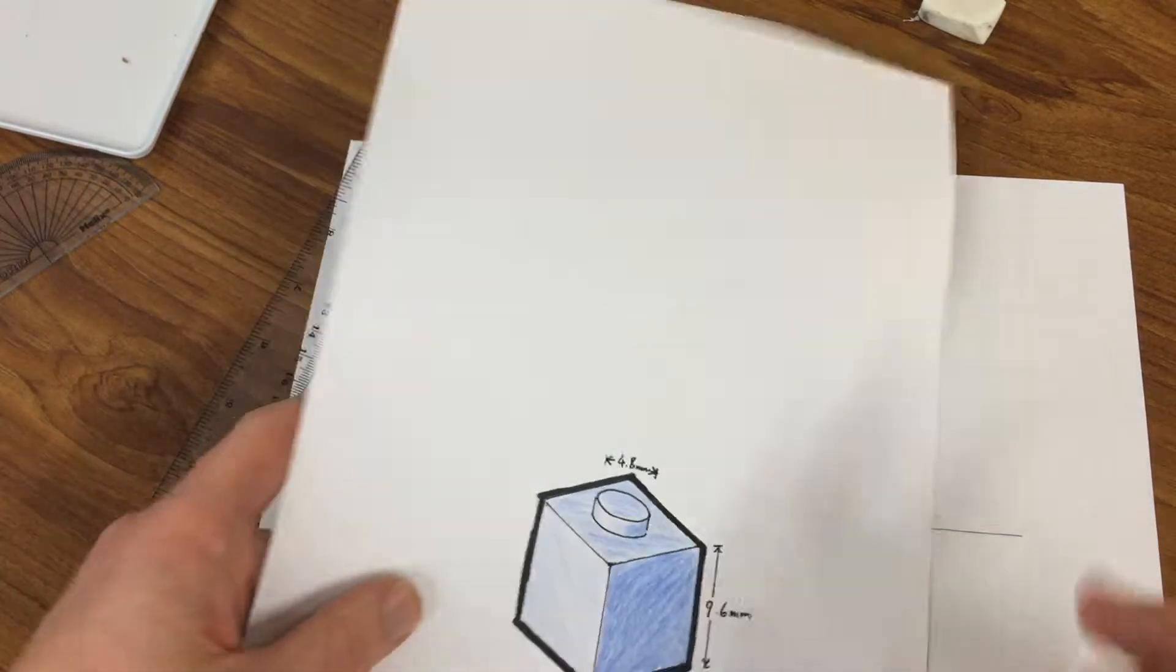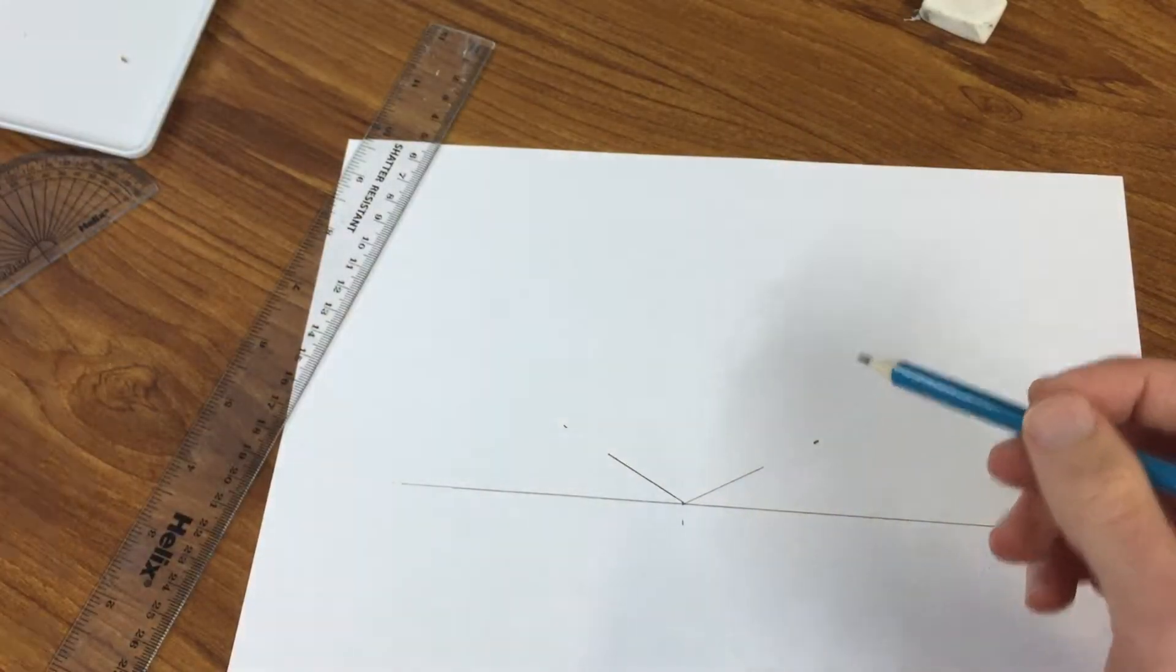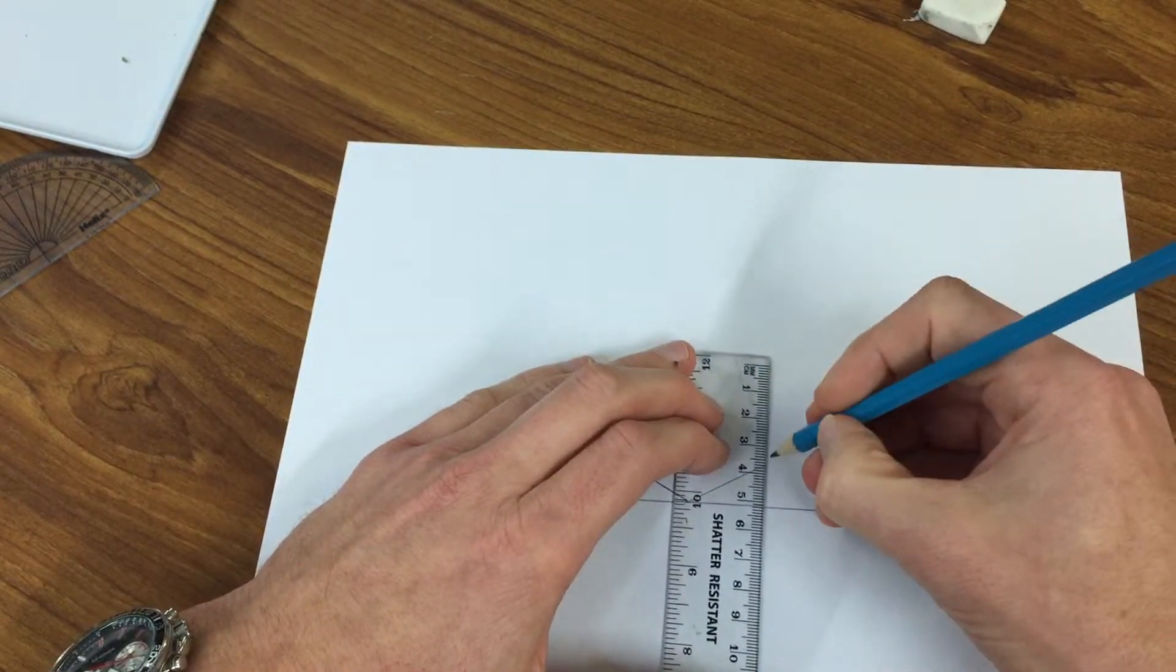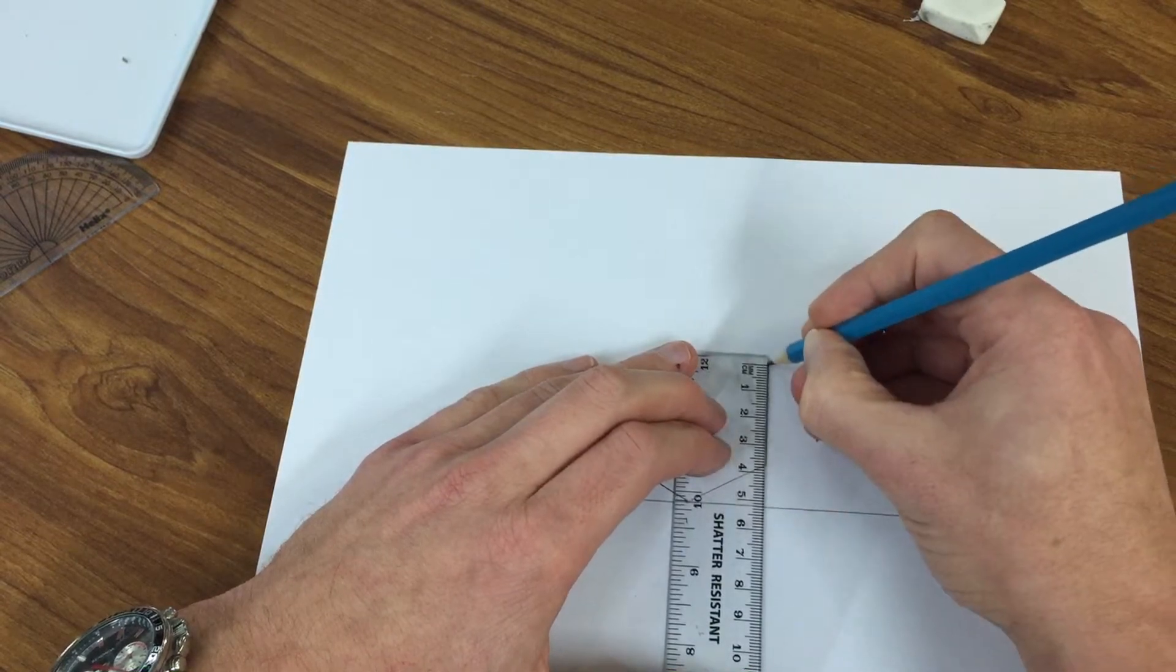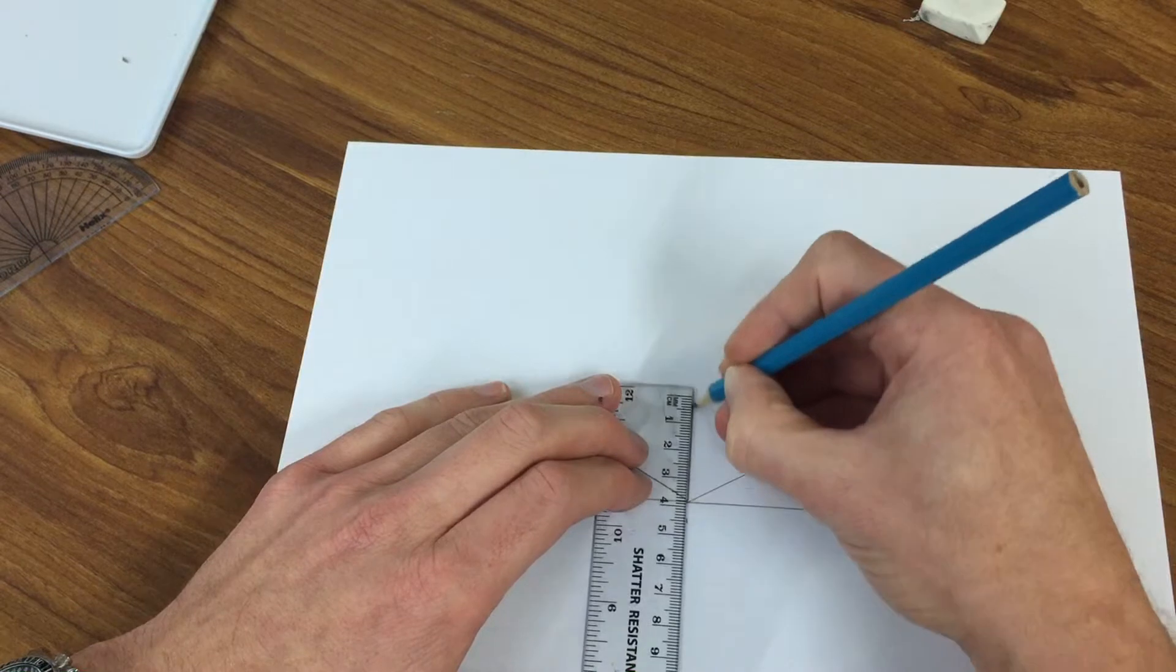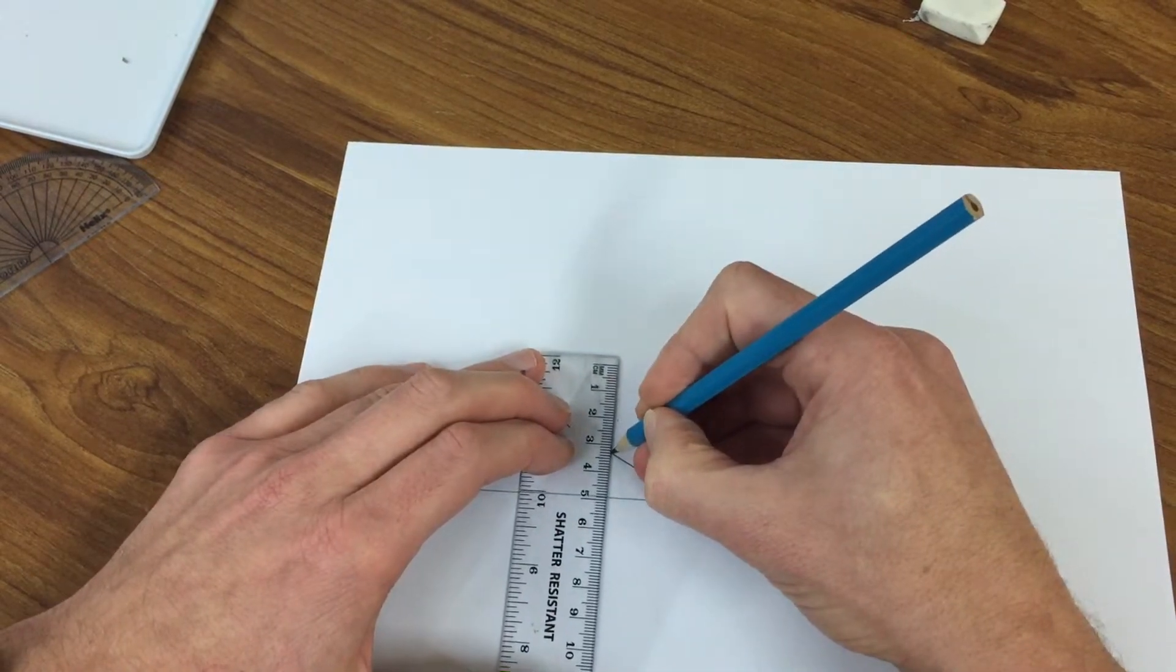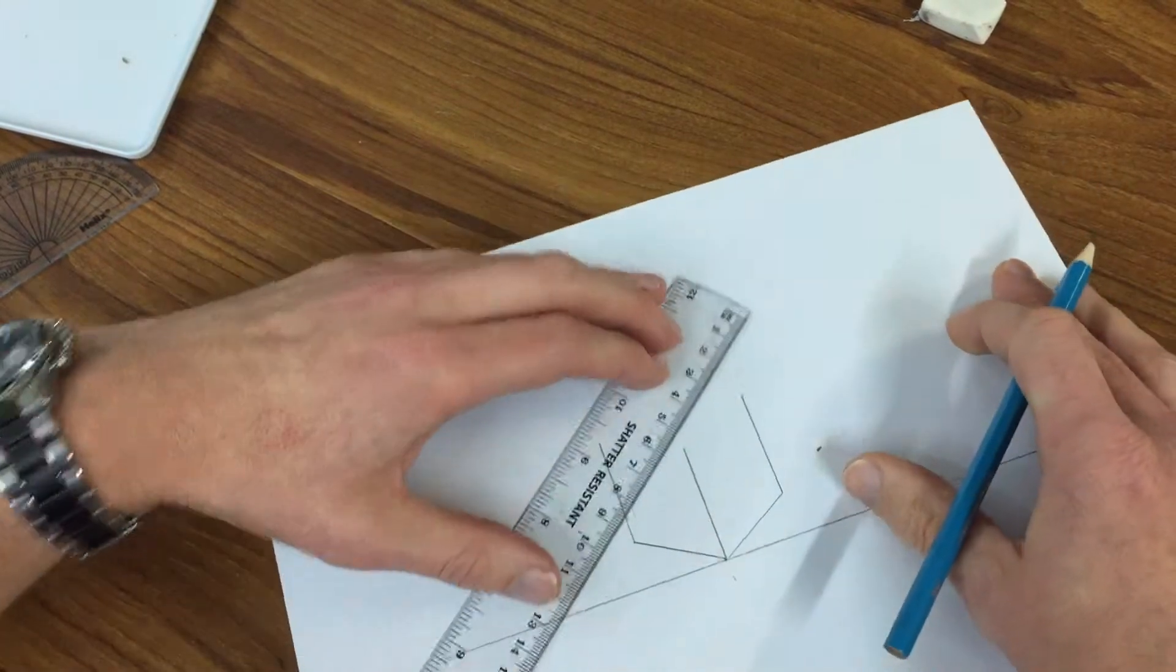Now the vertical height is 9.6 times by four, that's 38.4. So you're going to go straight up 38 millimeters. Like so. And you're going to do that the same here.